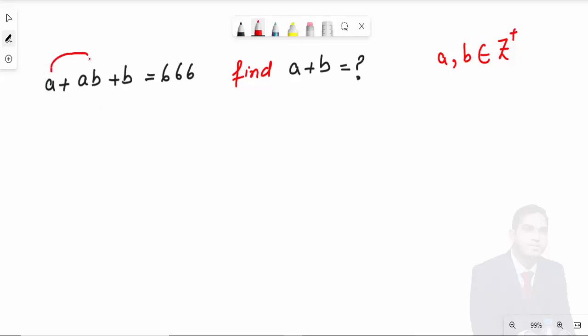Starting from this, a + ab, can I take a out of this? I can write this as a(1 + b) + b = 666. After doing this, add 1 on both sides: a(1+b) + b + 1 = 666 + 1, which equals 667.